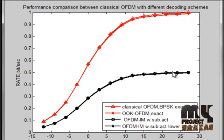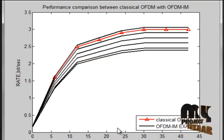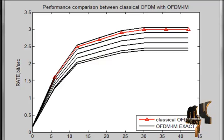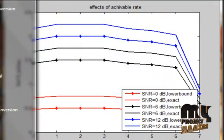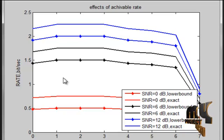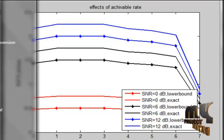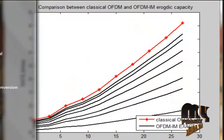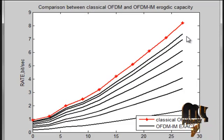WAVDM-IM with subcarrier activation only is also shown. We then discuss the comparison of WAVDM with classical WAVDM — here is the classical WAVDM and this is WAVDM-IM. We also discuss the effects of achievable rate in terms of M when SNR equals 0, 6, and 12. The black curve is SNR=6, red is SNR=0, and blue is SNR=0. Finally, we discuss the ergodic capacity comparison between classical WAVDM and WAVDM-IM.